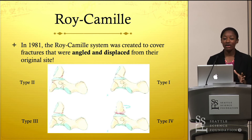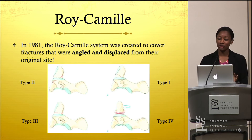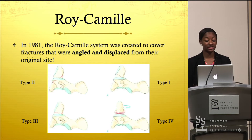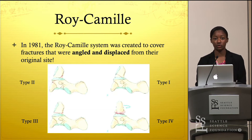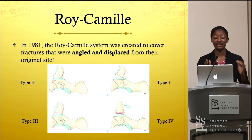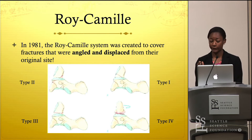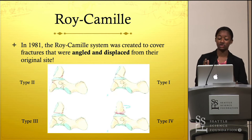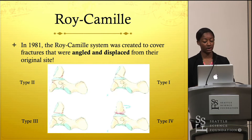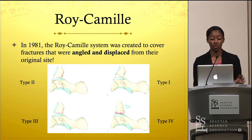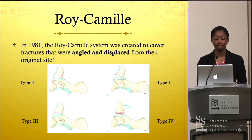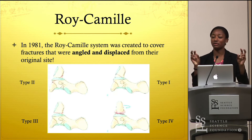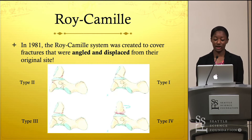The Roy-Camille classification was more specific. A type 1 fracture would be from anterior to posterior, slanted inferiorly. A type 2 fracture from anterior to posterior would be slanted superiorly. Type 3 would be a transverse or horizontal cut, and type 4 would be considered a policeman's hat fracture.